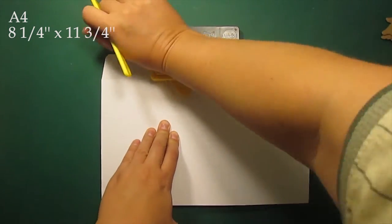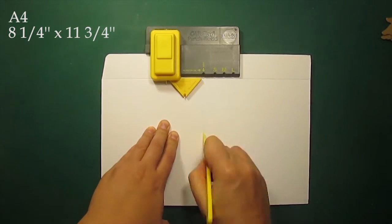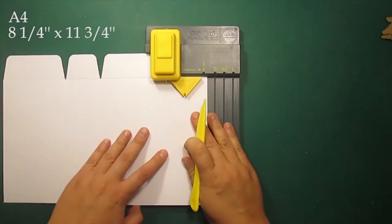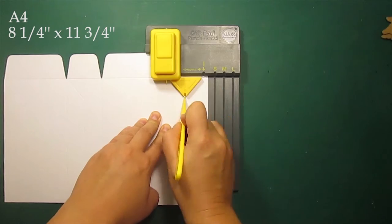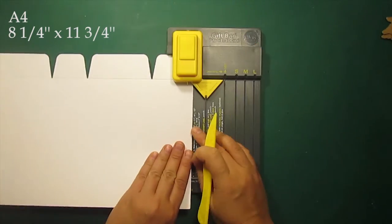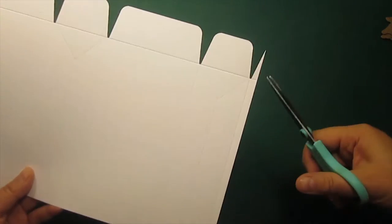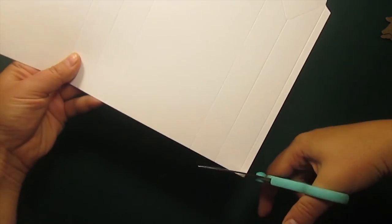To create a bag template I'm using an A4 sheet of white cardstock and a gift bag punch board by We Are Memory Keepers. This board makes three standard size bags S, M and L and for this project we'll need an L size.